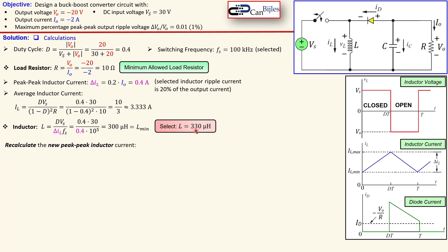Since we have changed the inductor value by increasing it, we also need to recalculate the new peak-peak inductor current using the same formula, rearranged to solve for delta IL with L = 330 microhenries. Using all other same values, we get 0.3636 amps, which is smaller than the original 0.4 amps. This confirms: if you increase the inductor value, you decrease the peak-peak ripple of the inductor current.